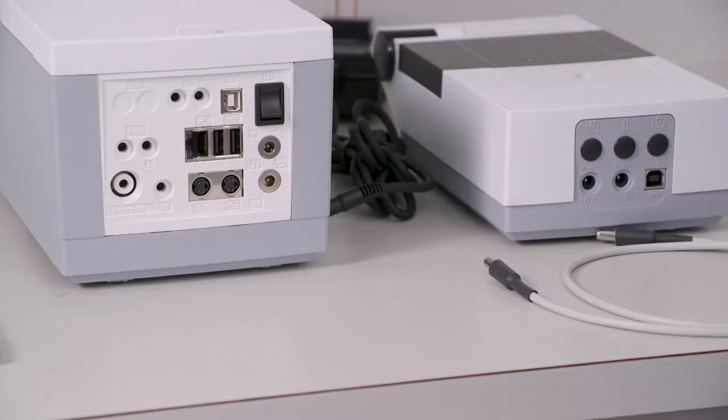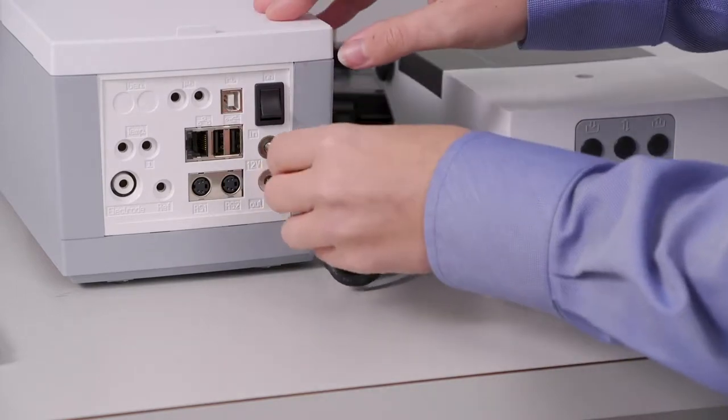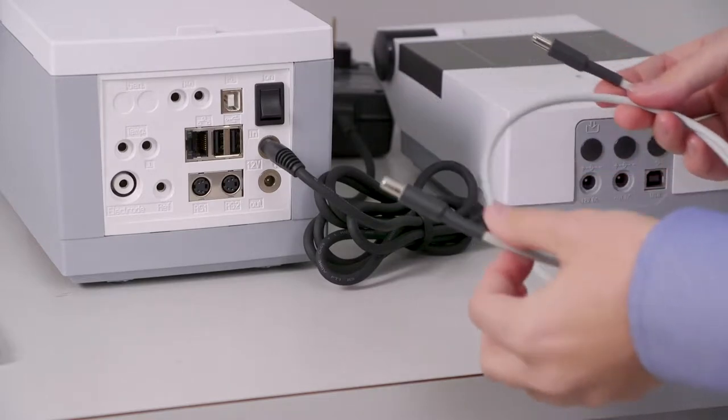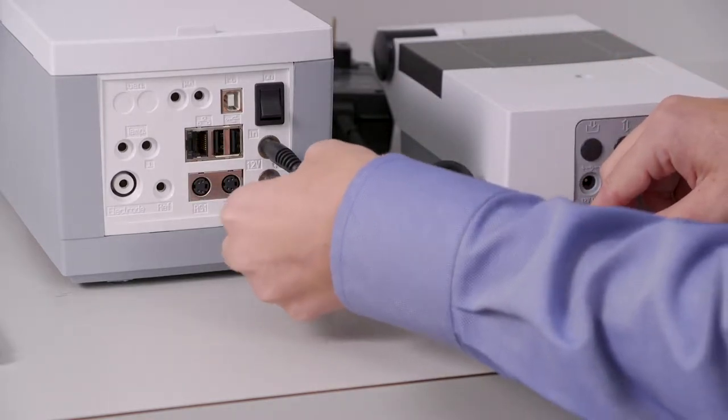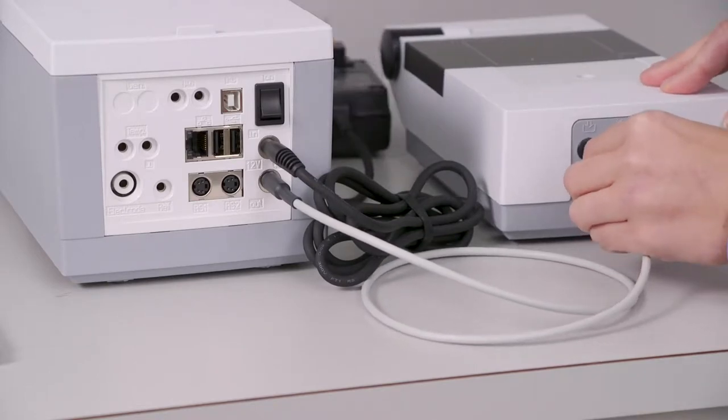The main power supply will get plugged into the in 12 volt port. The magnetic stirrer cable will get connected by one end into the out port here, and the other end into the in port of the magnetic stirrer.